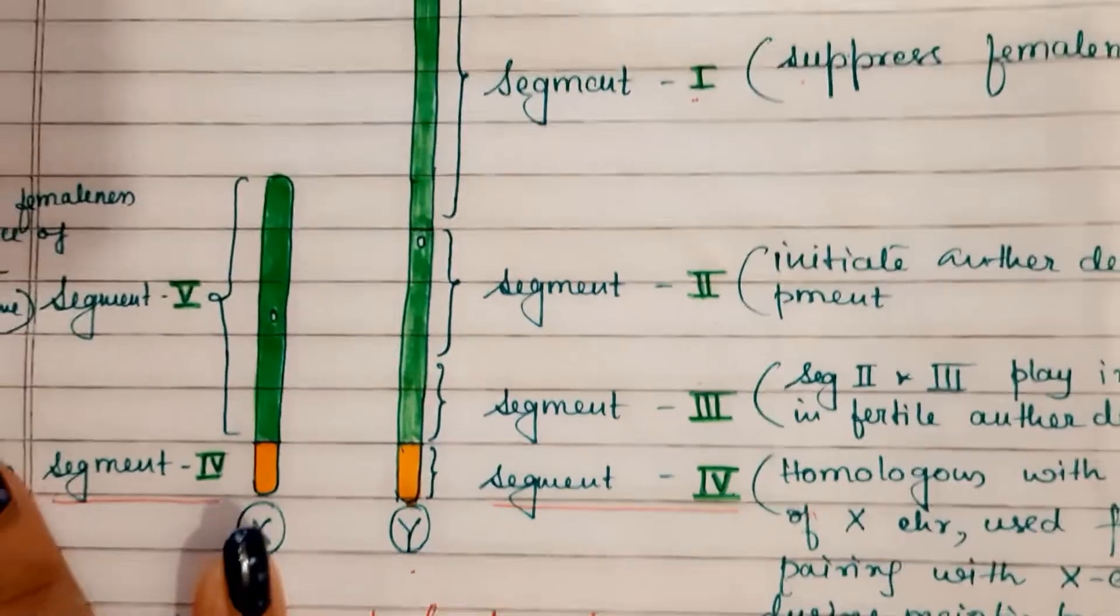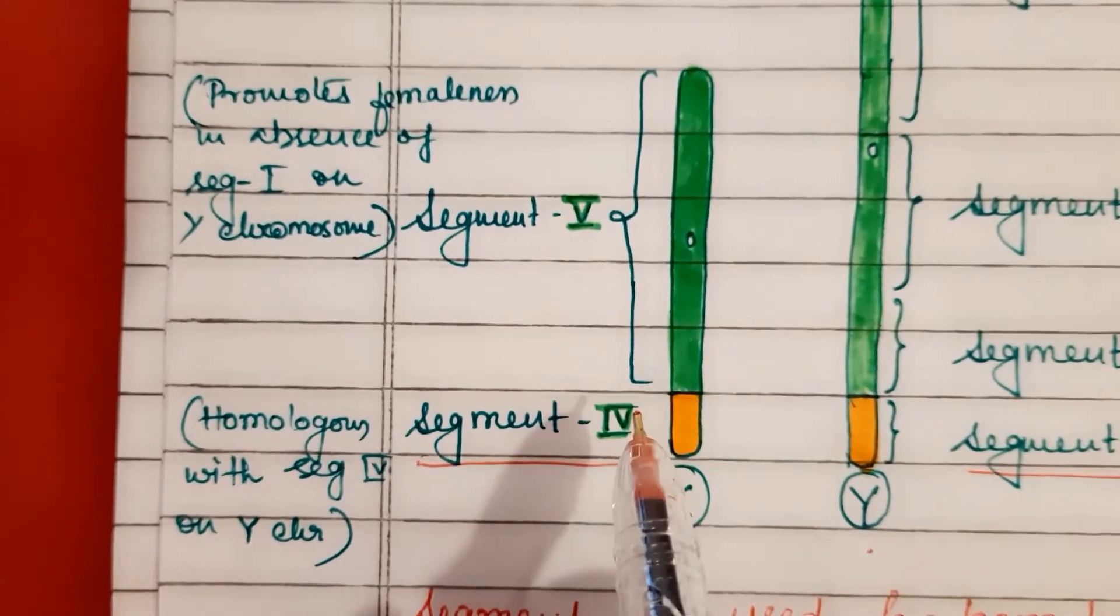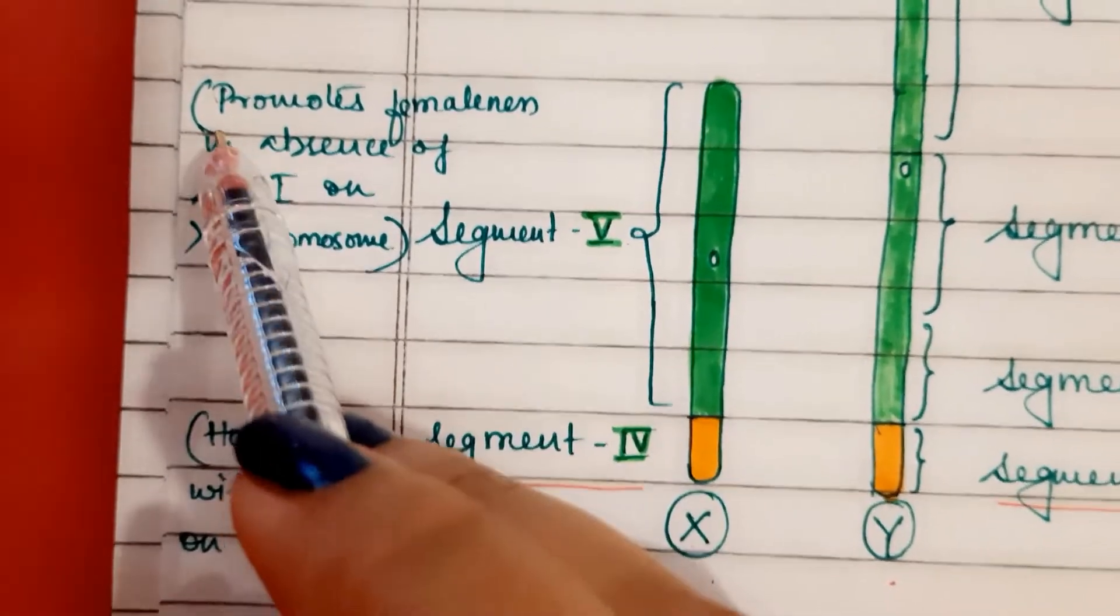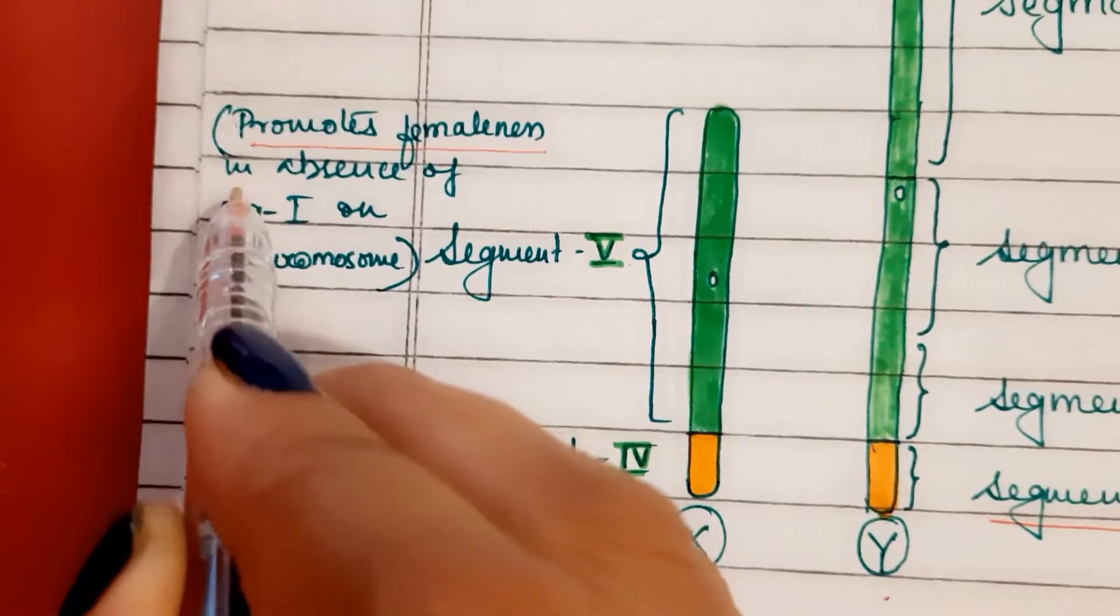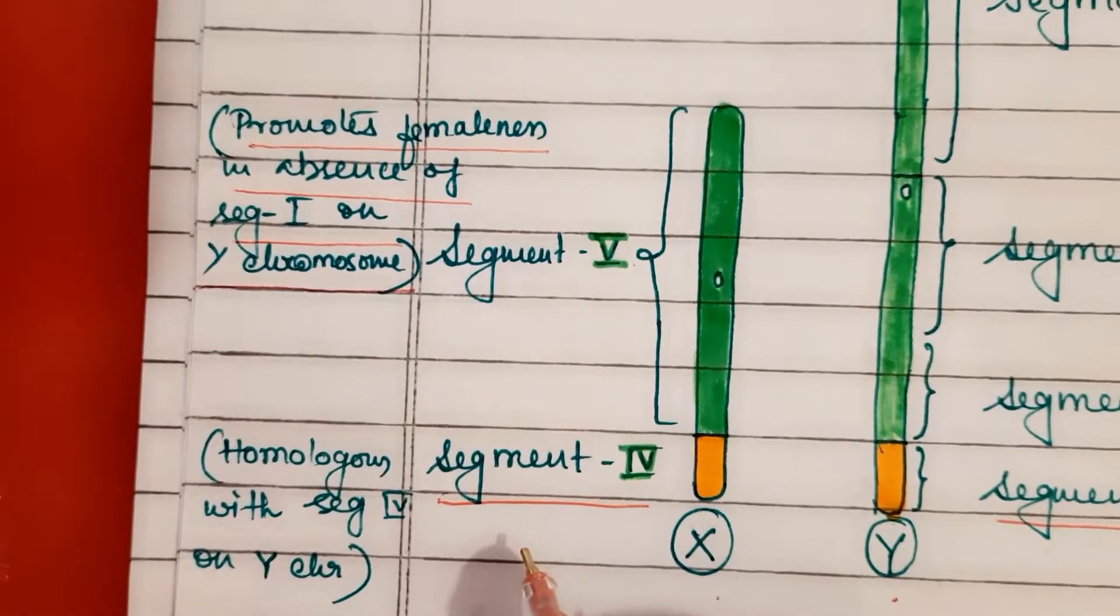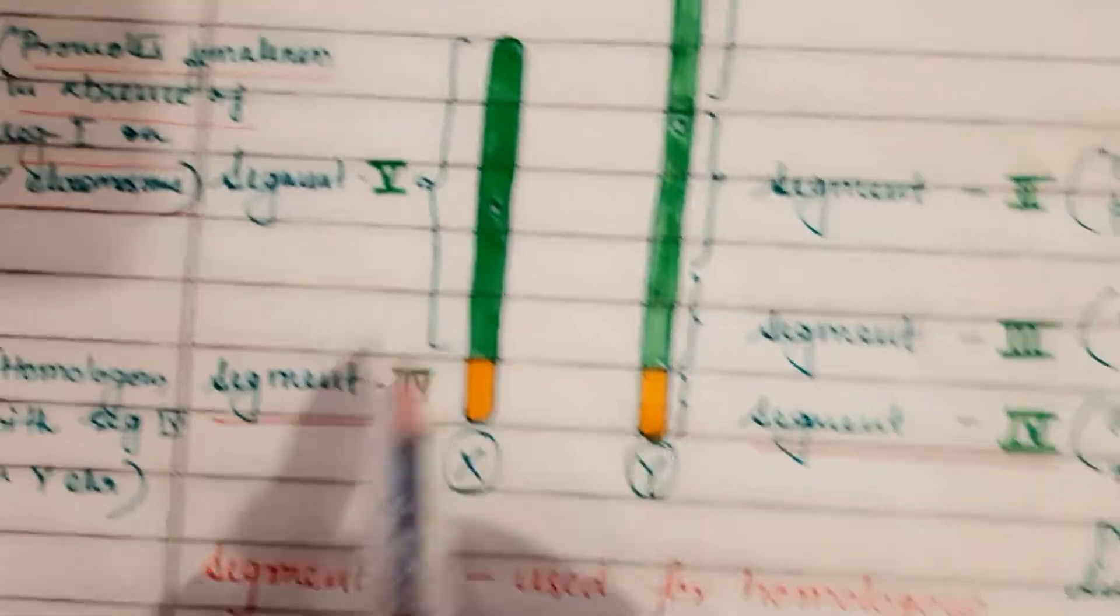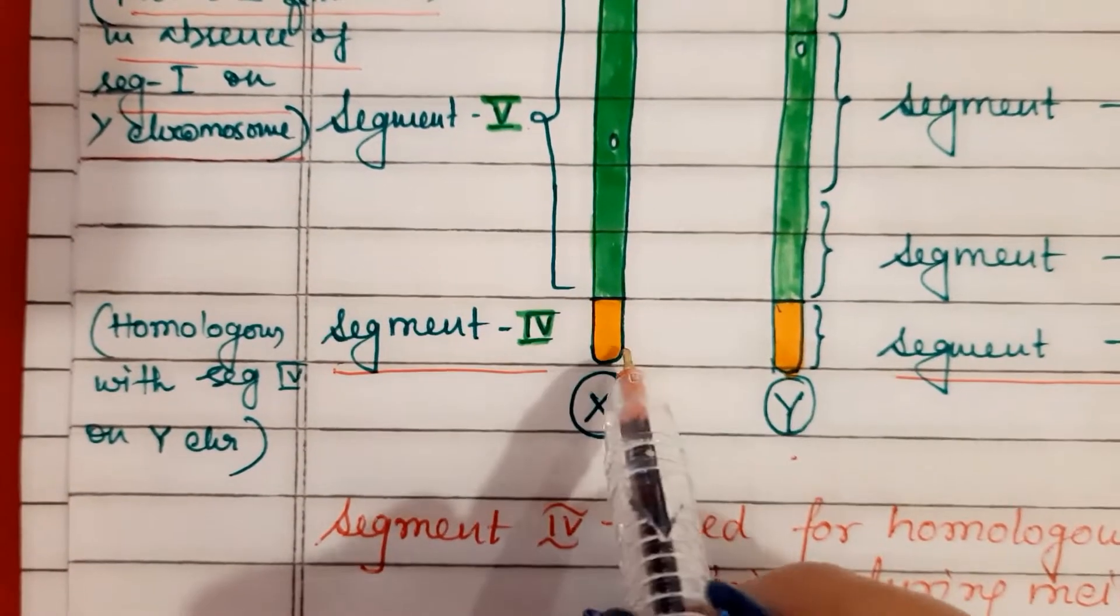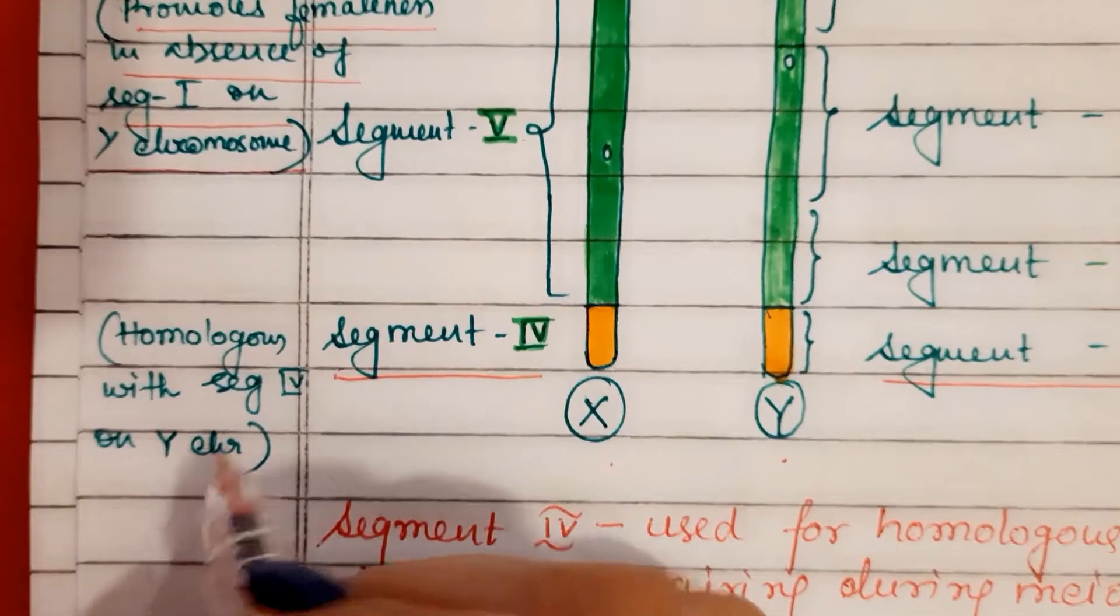Now we will move on to the segments of X chromosome. X chromosome is smaller than Y chromosome. X chromosome segment 5 is the X chromosome specific region and it promotes femaleness in absence of segment 1 on Y chromosome. Then segment 4, very much similar to the one on Y chromosome, is homologous with segment 4 of Y chromosome. That is why I have used similar colors here. It is used for pairing with Y chromosome during meiotic prophase.